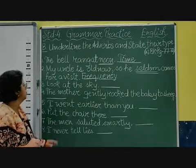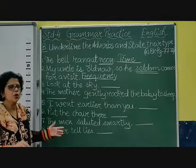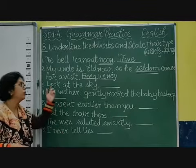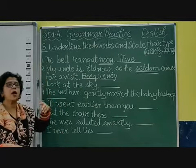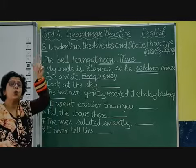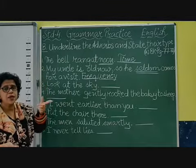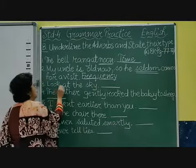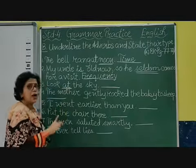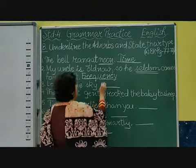Coming to the third one: 'Look at the sky.' As soon as you read this sentence, you understand that 'look' is the verb. Where did I look? I looked at the sky. So 'look' is your verb, 'at' is your adverb, and it indicates place — it gives the answer to the question 'where?'. So it is an adverb of place.